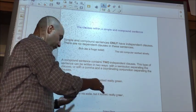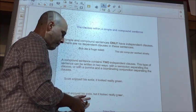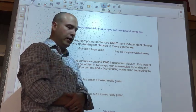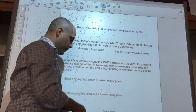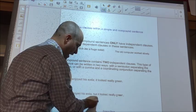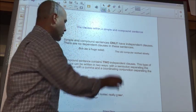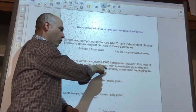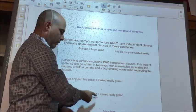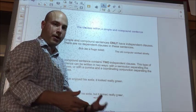Same two independent clauses. Scott enjoyed his soda, comma, but it looked really green. That but is kind of tricky because that is what's called a coordinating conjunction. We go back to the rule above. We have a comma and a coordinating conjunction. I've got a comma and what's called a coordinating conjunction, the word but.